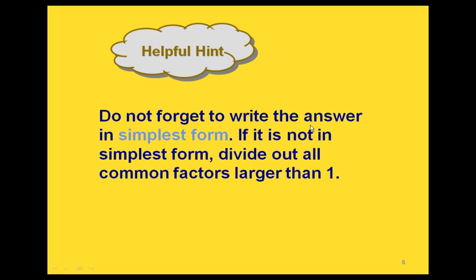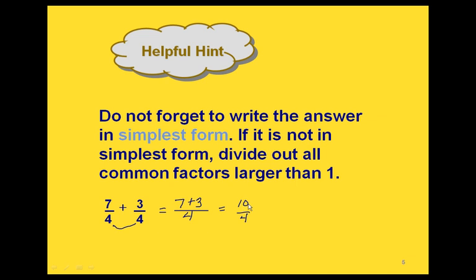When we are adding or subtracting fractions, we have to check and make sure the fraction is in simplest form. If it isn't, we divide out all of the common factors. Here's another example: these two are like fractions since they both have a denominator of 4, so that is going to be our new denominator. Remember, you don't add the denominators, only the numerators. On the top we have 7 plus 3, that gives us 10 fourths. This one is not in simplest form because 10 and 4 have a factor in common. Writing out the prime factorizations, we see they both have a factor of 2. If we cross that out, we get 5 halves, and that is our answer in simplest form.